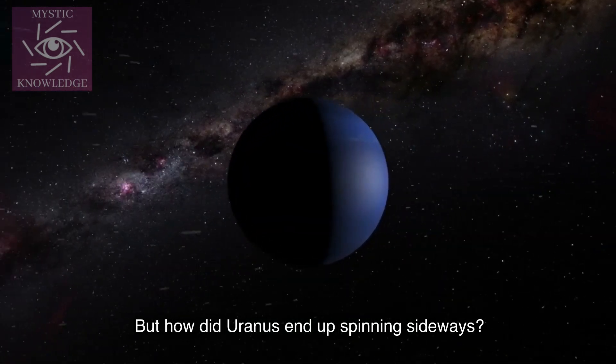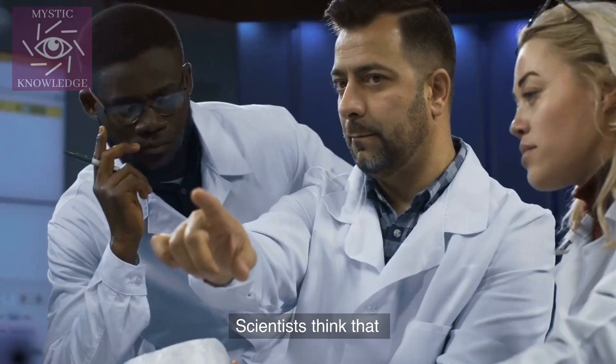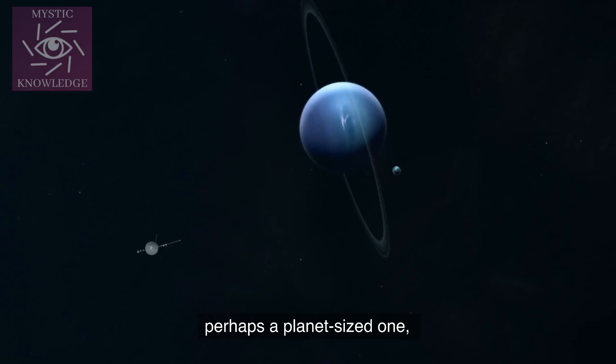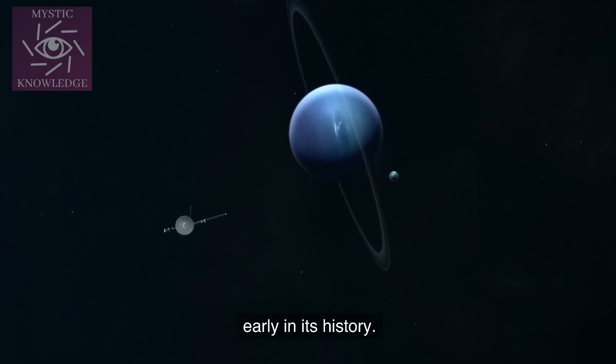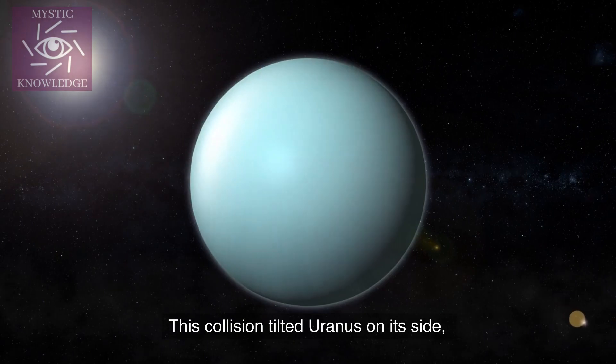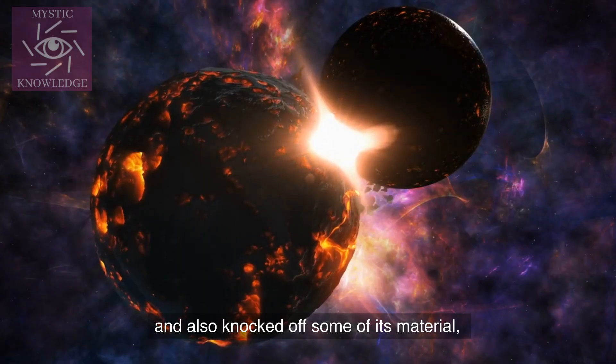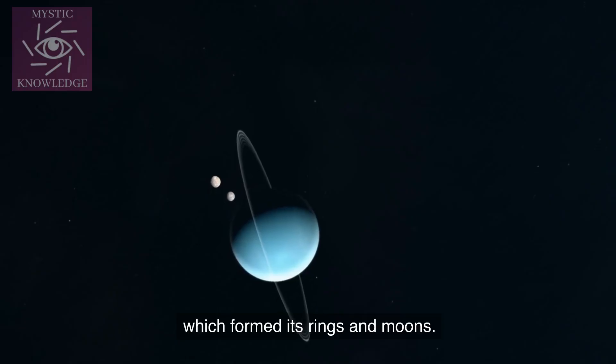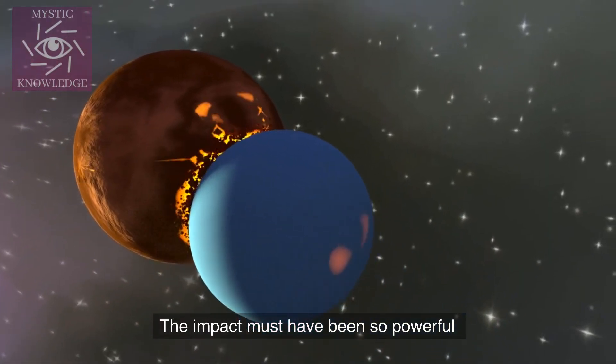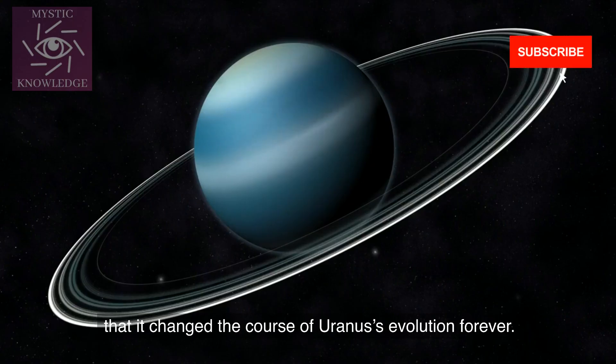But how did Uranus end up spinning sideways? Scientists think that Uranus was hit by a massive object, perhaps a planet-sized one, early in its history. This collision tilted Uranus on its side, and also knocked off some of its material, which formed its rings and moons. The impact must have been so powerful that it changed the course of Uranus's evolution forever.